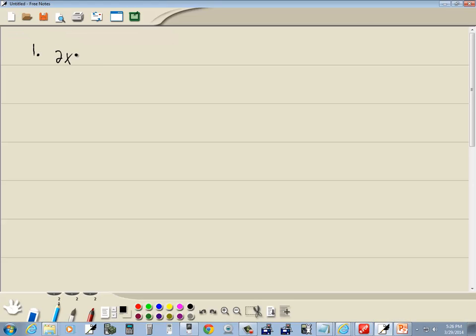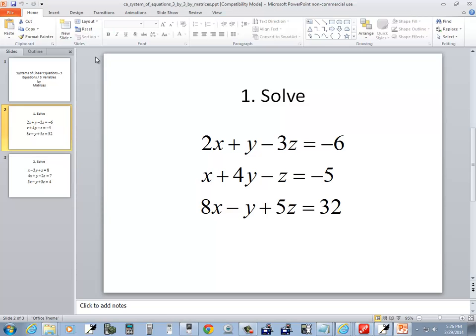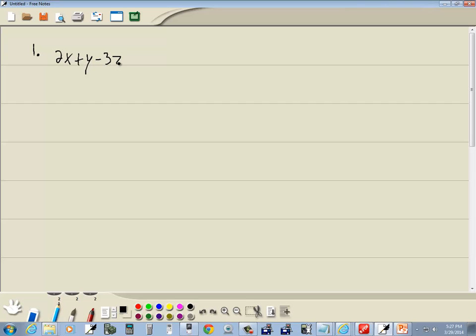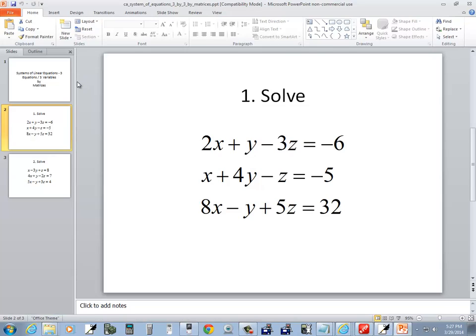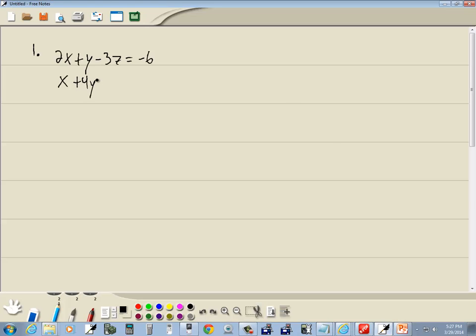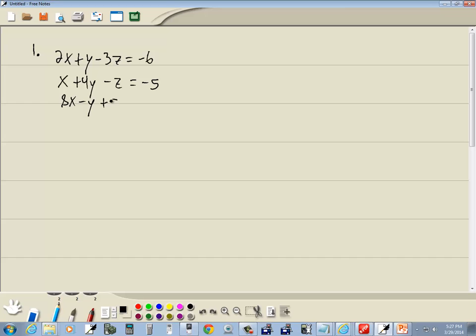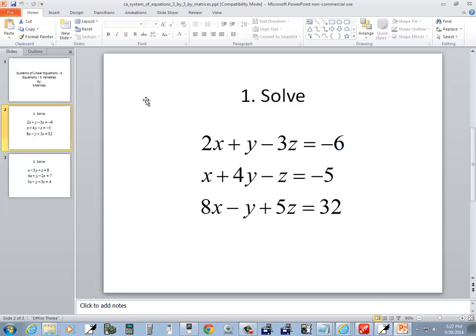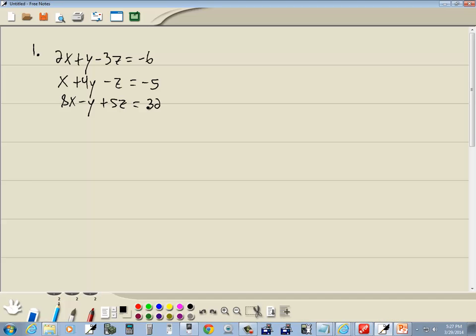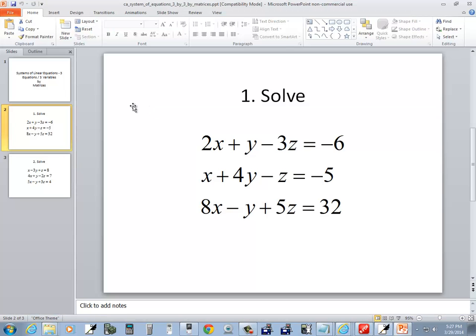We've got 2x+y-3z=-6, and x+4y-z=-5, 8x-y+5z=32. Let me double check everything. Okay, it looks right.